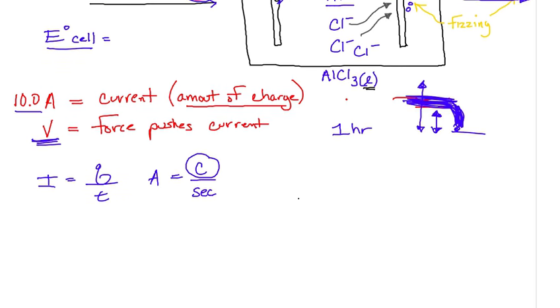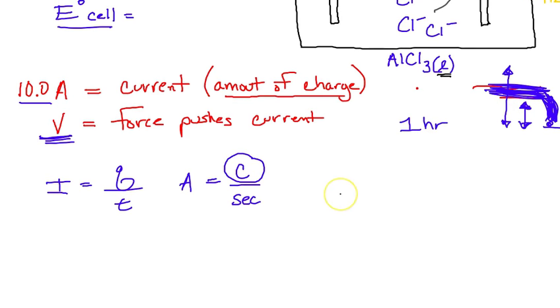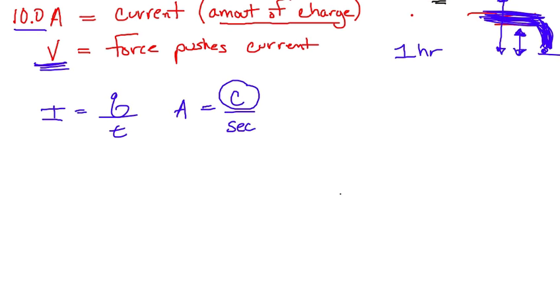So if we know that there is 10 Coulombs of charge per second, and this ran for one hour, can we figure out the total amounts of Coulombs? Absolutely. Now I'm going to do it by dimensional analysis. You can do it any way you'd like.